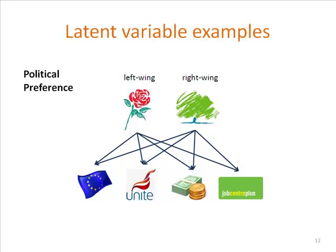A more familiar example might be political preference. If you're looking at ideology rather than attachment to an organisation, you might ask: What do you think about closer integration with Europe? What are your thoughts about trade unionism? How about taxation and redistribution of wealth and welfare systems? The patterns of correlations amongst opinions on these issues might be related to the idea of being left wing versus right wing — some higher ideology that guides your opinions on those issues. These things are everywhere. Just about anything that people think of that you can't see directly could be cast in a latent variable framework.